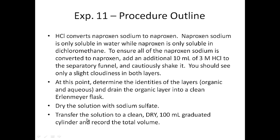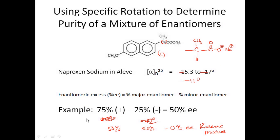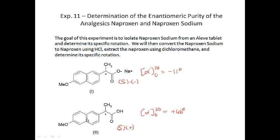The key to making the extraction work is that HCl converts naproxen sodium to naproxen — converting the carboxylate salt back to the carboxylic acid. This is the same chemistry you performed in the Excedrin tablet extraction, where aspirin's carboxylate was converted back to the carboxylic acid with HCl. The difference here is that naproxen doesn't precipitate well, so we use a liquid-liquid extraction instead of filtration.